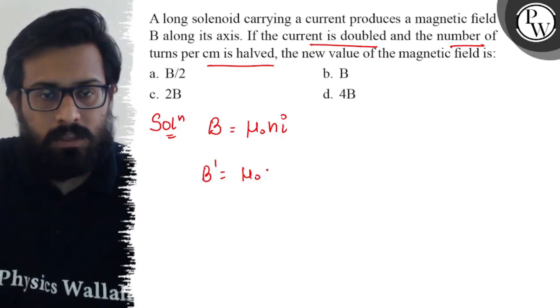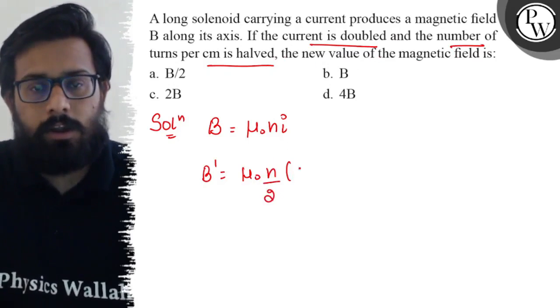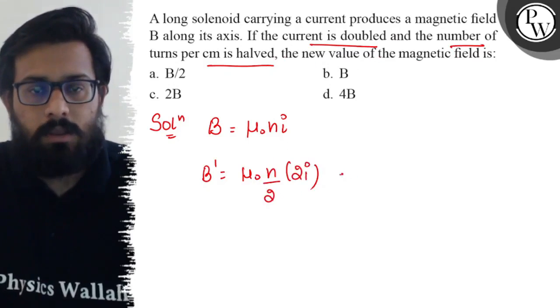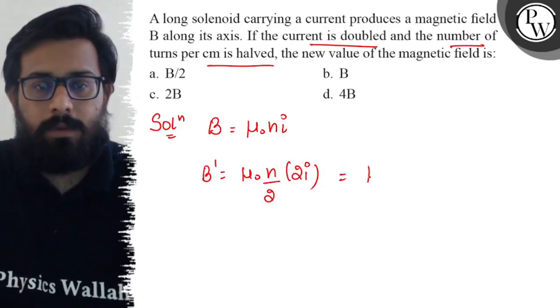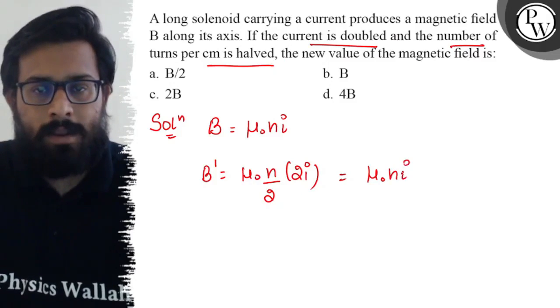So the new B equals μ₀ times n/2 times 2I, which equals μ₀nI again, so you get the same value.